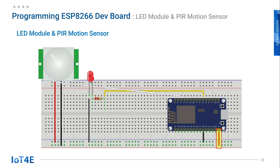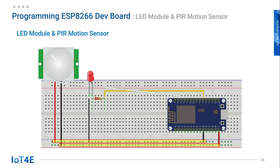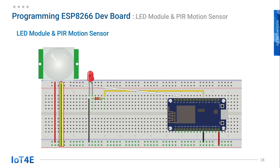To recap, let's check from the bottom right corner. We connect VIN, which is 5 volts, to the positive column of the breadboard. Connect the ground of the ESP8266 development board to the negative column of the breadboard, so these two wires provide respective power to the columns. The ground of the PIR motion sensor is connected to the negative of the breadboard, and the VCC of the PIR motion sensor is connected to the positive of the breadboard.